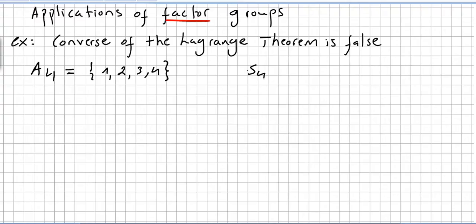So what is the order of the symmetric group S4? That's 24, right? And the even permutations, the alternating group, that is 12. So for instance, we can see that 6 divides 12.